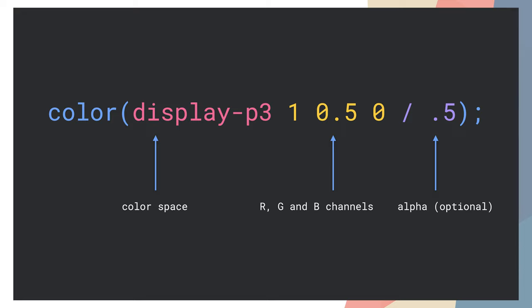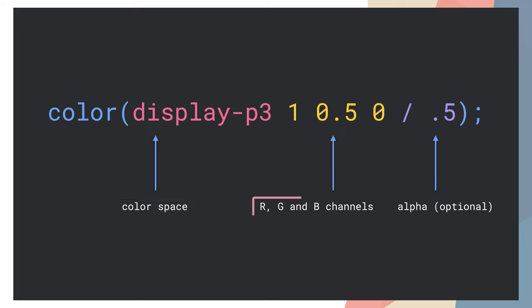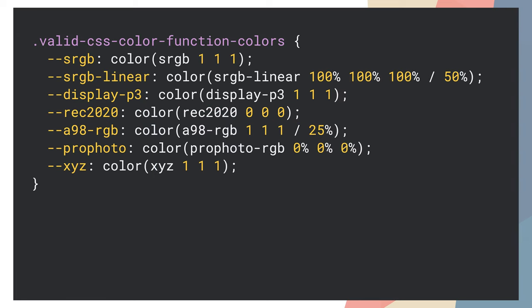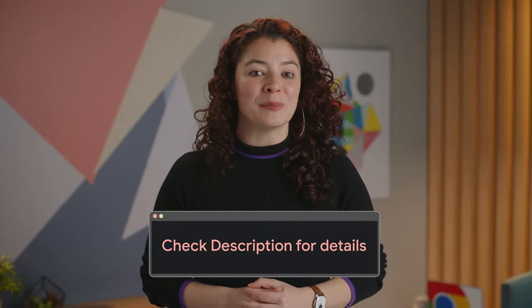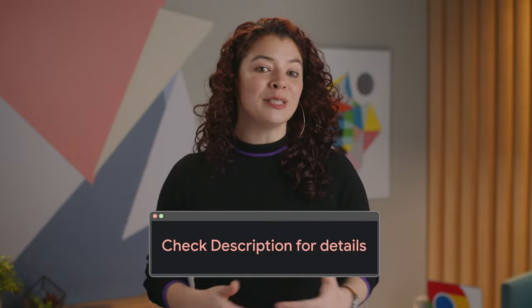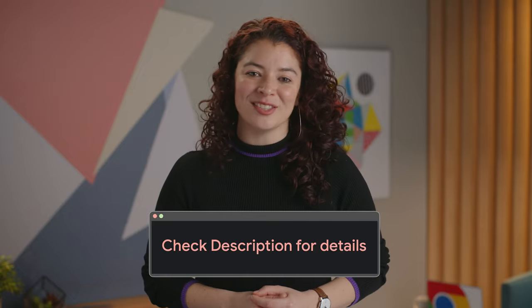The implementation includes the color function. It can be used for any color space that specifies colors with R, G, and B channels. Color takes a color space parameter first, then a series of channel values for R, G, B, and optionally some alpha. Here are some examples of using the color function with different color spaces. Check out the link in the description for more documentation to take full advantage of high-definition colors using CSS.